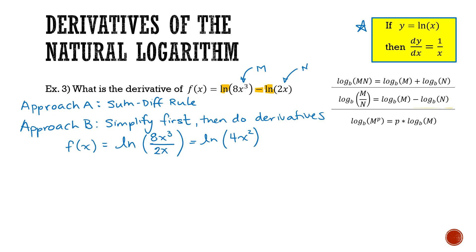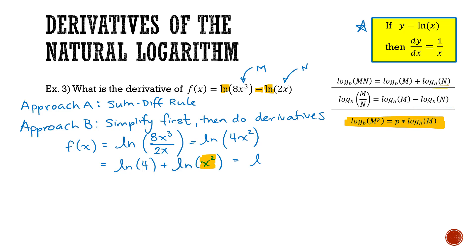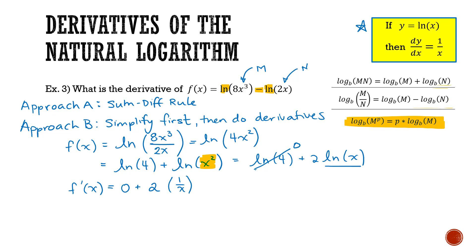From here it's like the previous example. I'll manipulate ln of 4x squared to isolate ln of x. Using the product rule, ln of 4x squared becomes ln of 4 plus ln of x squared. Then using the power rule, ln of x squared becomes 2 times ln of x. Now I can differentiate: the derivative of ln of 4 is 0 since it's a constant, plus 2 times the derivative of ln of x, which is 1 over x. This simplifies to f prime of x equals 2 over x — the final answer.